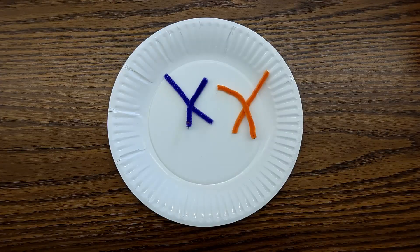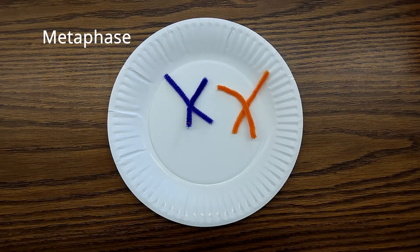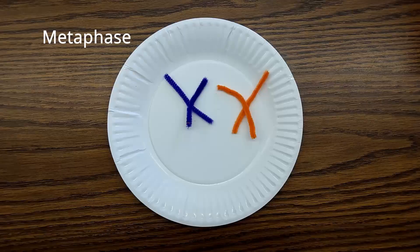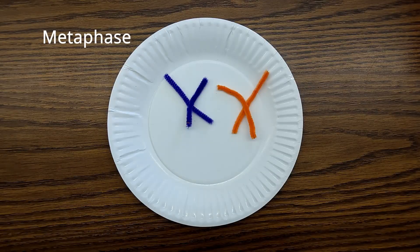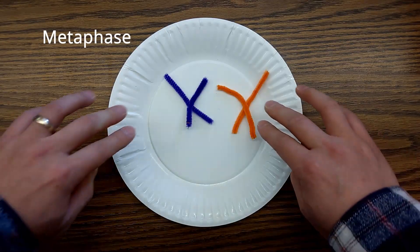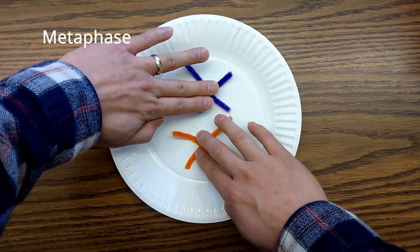Following prophase, the next phase is metaphase. Structures called spindle fibers guide chromosome movement and help them line up in the middle of the cell like that.